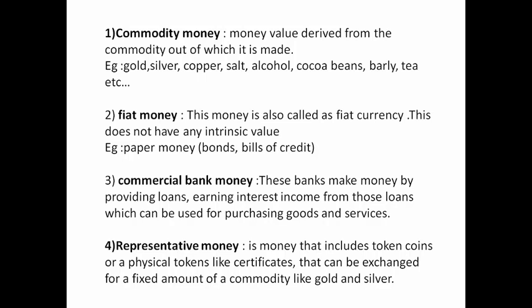Next, representative money. It is money that includes token coins or physical tokens like certificates that can be exchanged for a fixed amount of a commodity like gold and silver. It can be exchanged on demand for a commodity that has intrinsic value — the physical quantities being gold and silver, which have a particular value for which we exchange a money value.